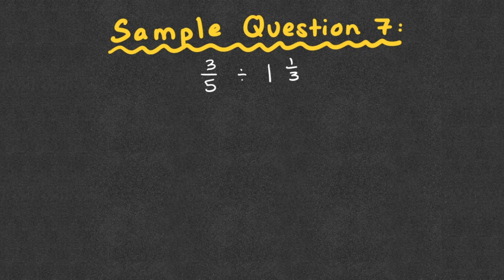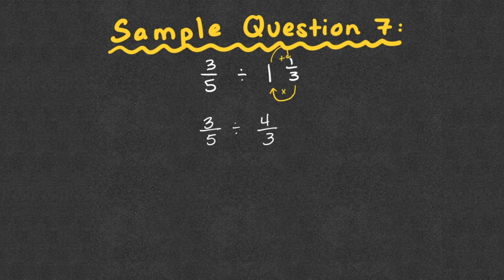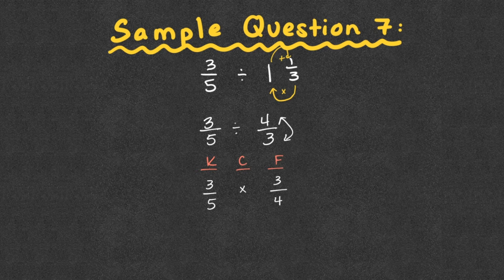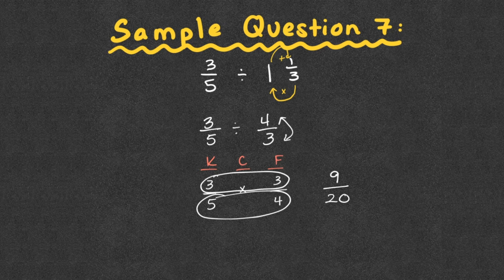Sample question seven: three-fifths divided by one and one-third. First, convert the mixed number: three times one is three, plus one is four — four-thirds. So we have three-fifths divided by four-thirds. Applying KCF: keep three-fifths, change division to multiplication, flip four-thirds to three-fourths. Looking crossways, three and four share only a factor of one; five and three share only one. Multiply: three times three is nine, five times four is 20. Final answer: nine-twentieths.